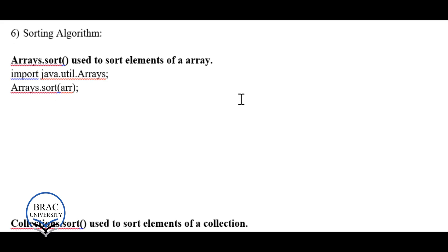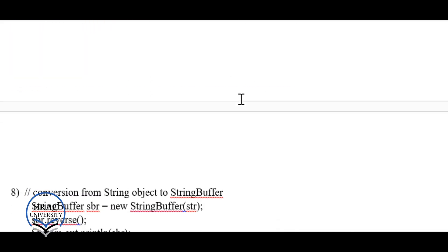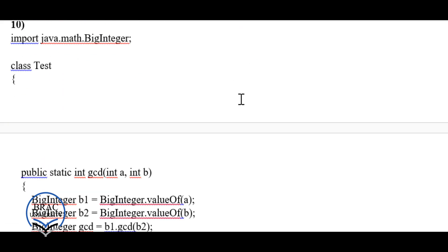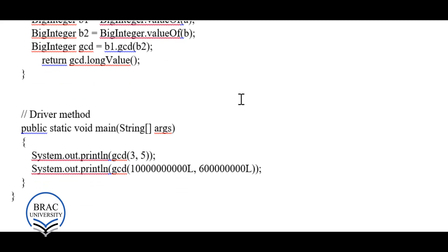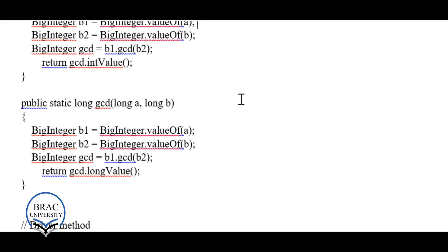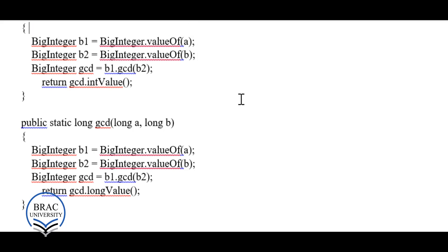For array sorting in Java, import java.util.Arrays, then call Arrays.sort() and pass the array variable you want sorted. There is also BigInteger in Java, which we'll cover later after completing the C++ tutorials — it's useful for handling very large numbers, though not widely used.